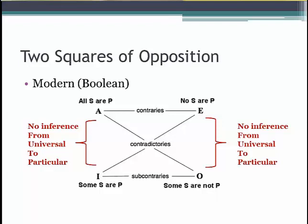So in the modern square of opposition, it is not valid to infer an I claim from an A claim, nor — for the same reason — an O claim from an E claim. E claims are also universal and O claims are particular. In the modern or Boolean square, you cannot infer a particular from a universal claim.